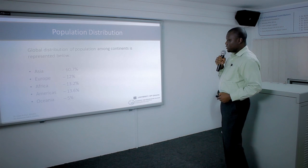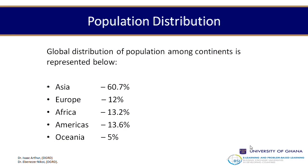In terms of the percentages of distribution, Asia takes 60.7 percent — this data is a bit old so by now it could be higher. Europe's population could be declining a little because of people not being interested in giving birth anymore. Africa's population is 13.2 percent and is set to grow higher. The Americas have 13.6 percent, and Oceania has just 5 percent.